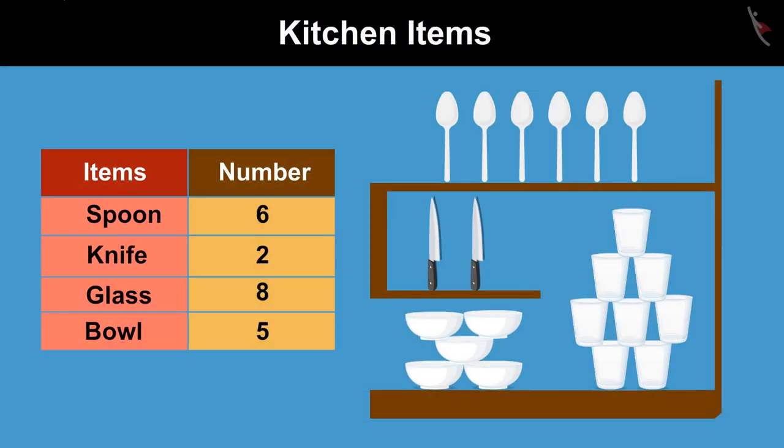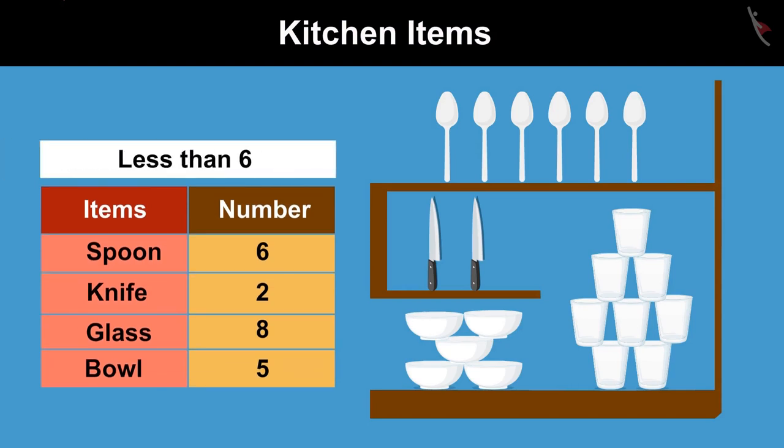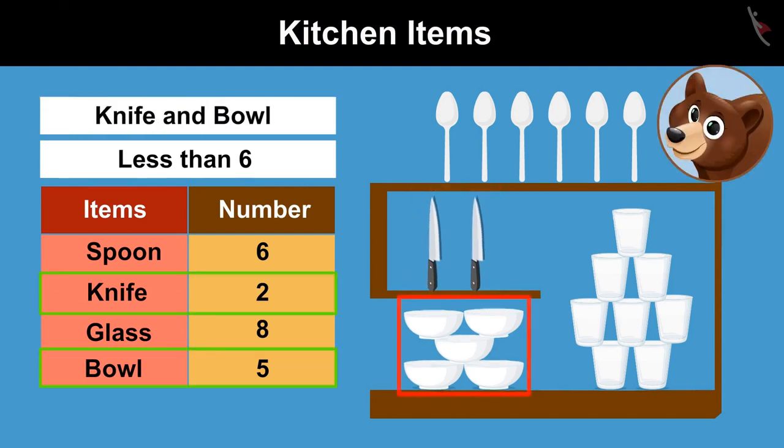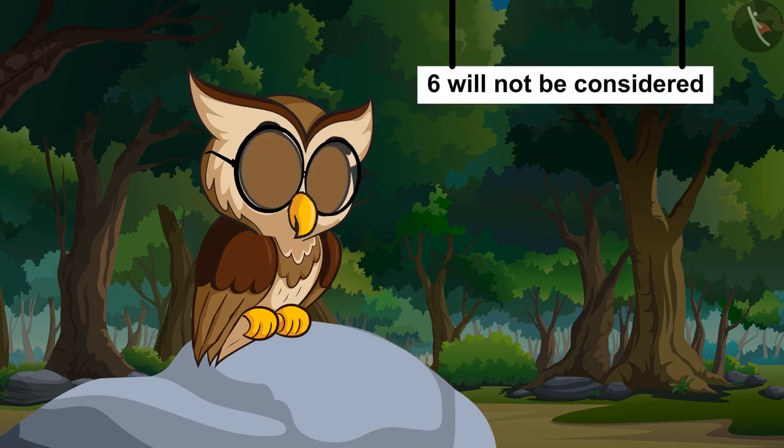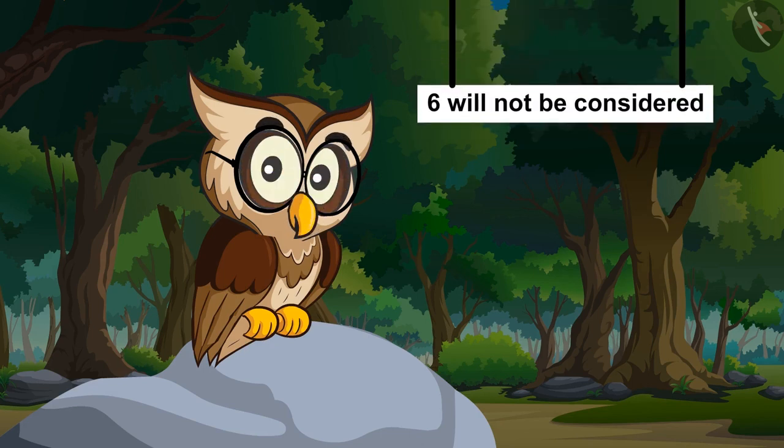So now can you tell me, which kitchen item is less than 6 in number? Knife and bowl. Absolutely right. While counting less than a particular number, the number itself is not considered.